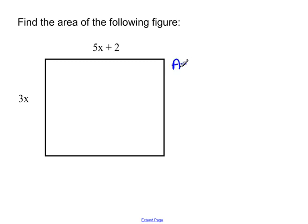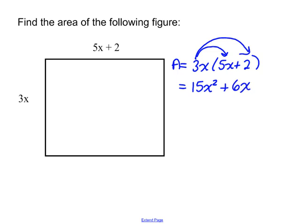To find the area of this figure, we're going to do 3x times (5x plus 2). It just makes it a little bit easier to write the monomial first times the polynomial second. We're going to do distribution: 3x times 5x is 15x squared, 3x times 2 is 6x. Because those are not like terms, we're done. That is the area of that particular rectangle.